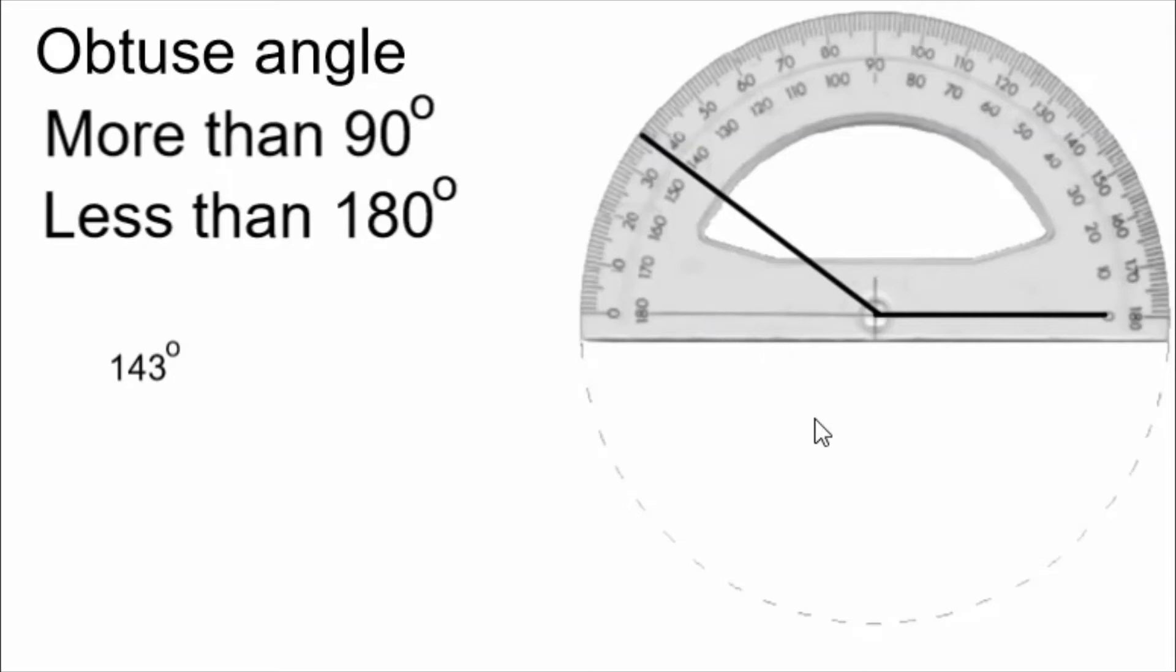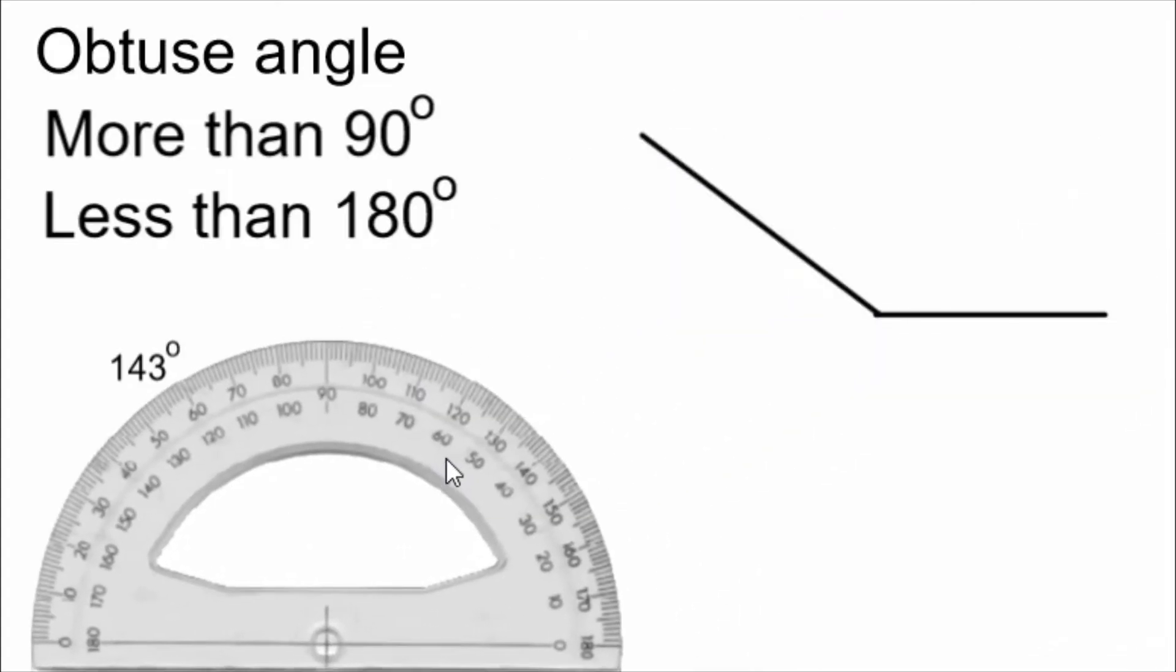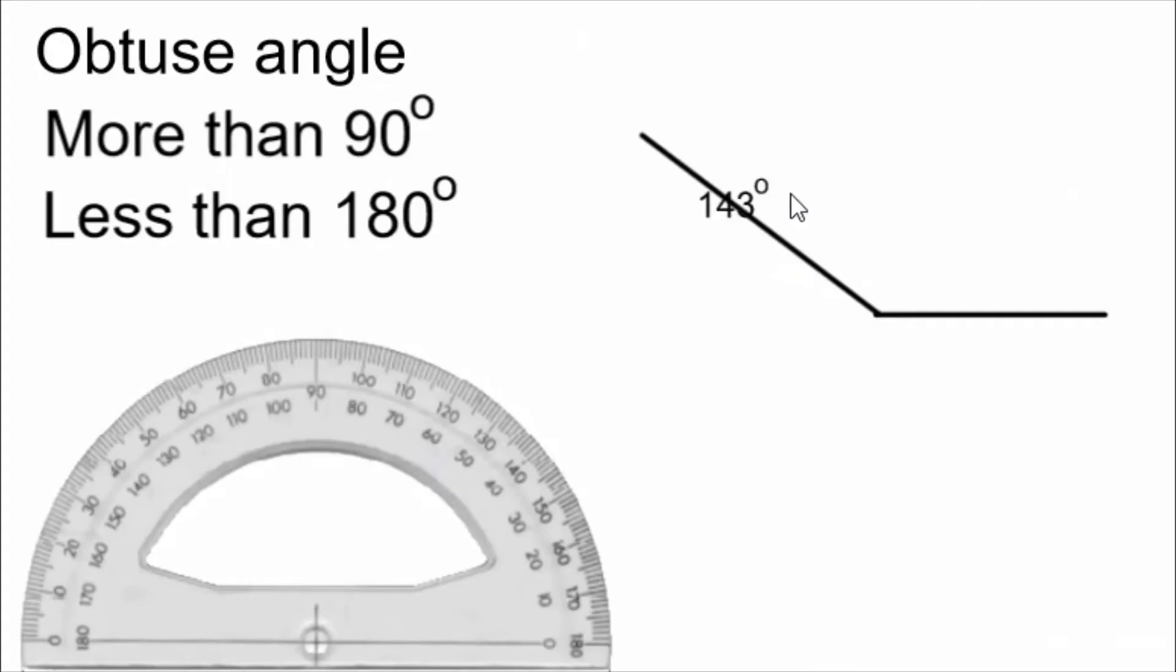Now I have a 143 degree angle. I can move my protractor out of the way, and I can label my angle. I write 143 degrees inside the angle, and I draw an arc. That's a pretty messy arc, but it'll have to do for now.